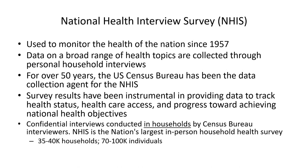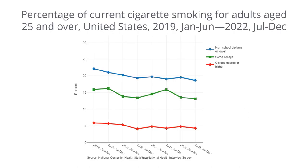The National Health Interview Survey is the nation's largest in-person household health survey, covering about 35,000 to 40,000 households and 70,000 to 100,000 individuals in each survey. This data visualization from the National Health Interview website shows the prevalence of cigarette smoking among adults 25 years and older from 2019 through 2022, stratified by educational attainment. Something to think about is what makes the National Health Interview Survey and BRFSS different and how that influences the data and its interpretation.